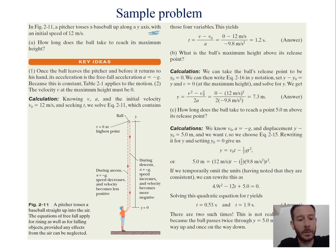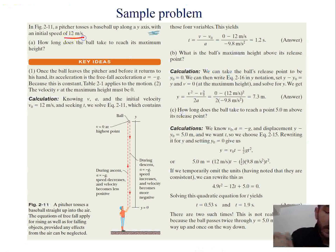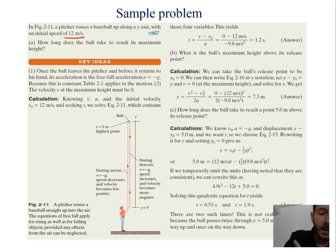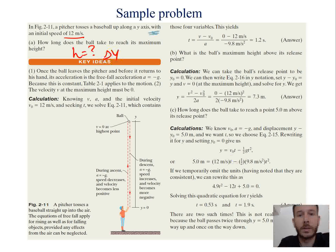Let's start with an example problem. A pitcher tosses a ball straight up along the y-axis with an initial speed of 12 meters per second. When we're talking about anything in the y direction, we just call it y — so instead of x we're going to have delta y.